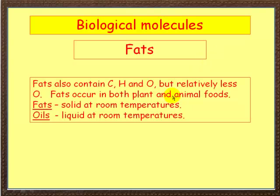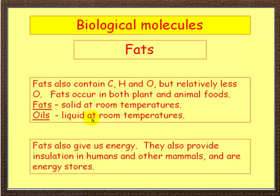Let's go on now to fats. Now fats also contain those three elements: carbon, hydrogen and oxygen. But compared to carbohydrates, they contain relatively less oxygen. They occur in both plant and animal foods. The difference between fats and oils is that fats are solid at room temperature. Oils are liquid. So at about 20 degrees Celsius, oils are liquid and fats are solid. That's the difference.